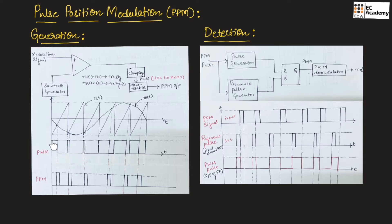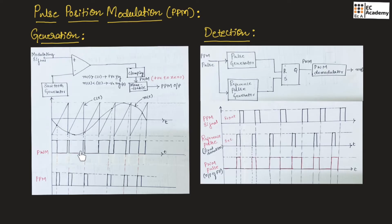This is the output of the comparator where we have output as positive and 0. The output of the clamping circuit is a pulse width modulation signal. As you can observe, this is the width of the pulse, and comparing the widths, we have less width for one pulse and more width for another, which means the width of the pulse is varying. So the output of the clamping circuit is a pulse width modulation signal.